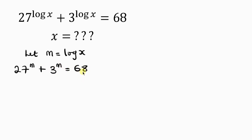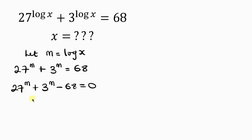Our next step is to move this 68 to the left-hand side. So we have 27 to the power of m plus 3 to the power of m; as 68 crosses to the left it becomes negative 68, equal to 0. Now let's simplify 27 to have a base of 3, so this becomes 3 to the power of 3, raised to the power of m, plus 3 to the power of m minus 68 equal to 0.